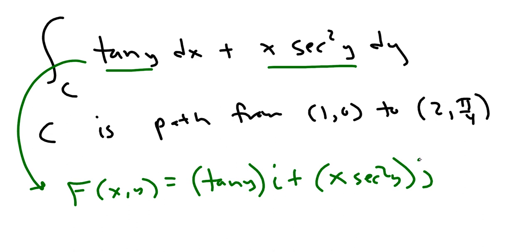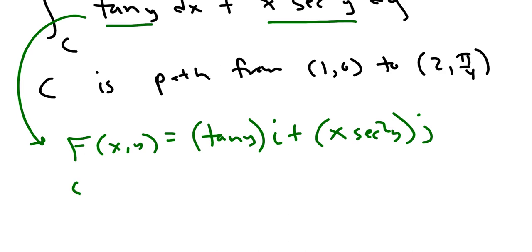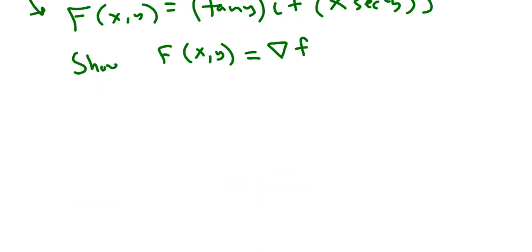And if you want to show that the line integral is independent of path, then what we need to show is this: Show that this vector field f(x,y) is equal to the gradient of f, where f is a scalar function. And that's important. So it's a scalar function.